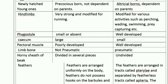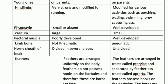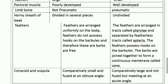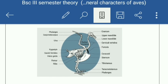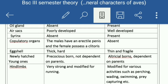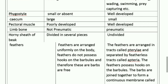The next character is the pygostyle. The pygostyle is the part of a bird that supports the tail feathers — it is a triangular plate formed by the fusion of caudal vertebrae. You can observe the pygostyle in the picture as the fourth part from the left side, which supports the tail feathers. In Ratitae the pygostyle is small or may be absent, while in Carinate it is well developed.